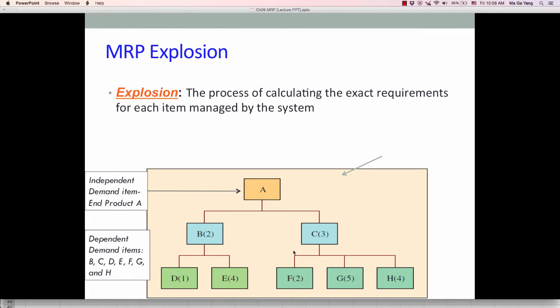For example, in this case, A is the end item and once demand for A is entered, then the MRP system evaluates the impact. Say customer demand for A is 200 units in a particular week. Then we have to really find out the impact, how much to order for B, C and all the way to H.